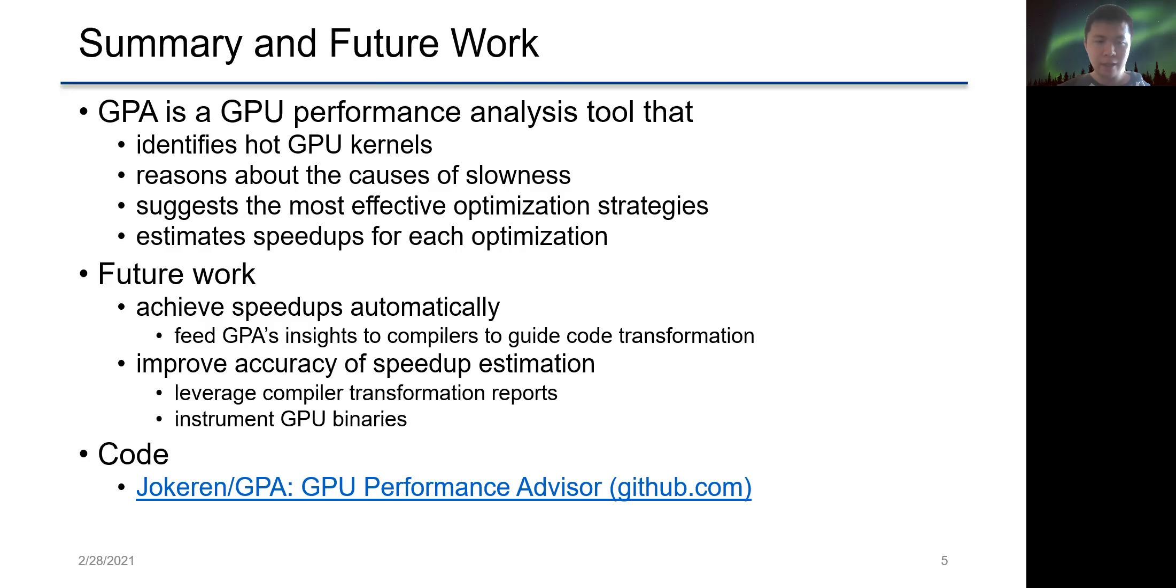In the future, we want to enhance GPA to achieve speedups automatically. To do this, we can feed GPA's insights to compilers to guide code transformation. We also want to enhance the accuracy of speedup estimation. We can leverage compiler transformation reports and instrument GPU kernels to collect more performance metrics.